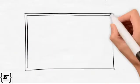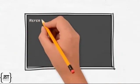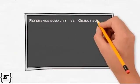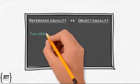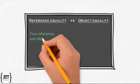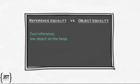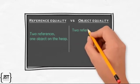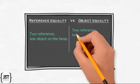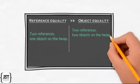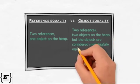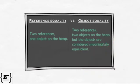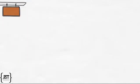Let us understand reference equality versus object equality. Reference equality means two references, one object on the heap. Whereas, object equality means two references, two objects on the heap, but the objects are considered meaningfully equivalent. Let us understand with examples.